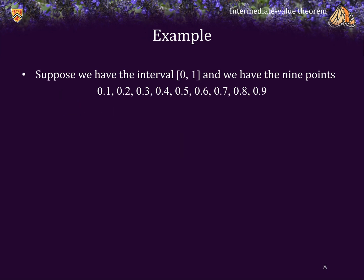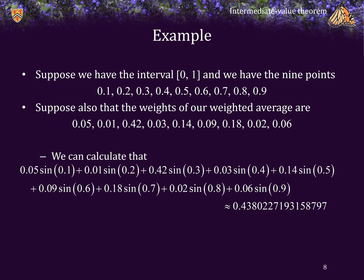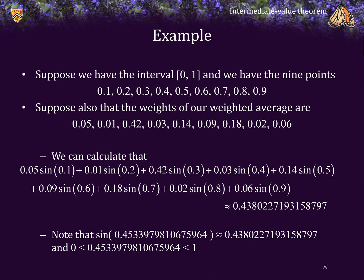As an example, suppose we have the interval [0, 1] and the 9 points 0.1 through 0.9. Suppose the weights of our weighted average are these 9 values, and they sum to 1. The sine function is continuous, so if we calculate sine at each x-value and take the corresponding weighted average, it works out to approximately 0.438. Note that sin(0.453397981...) is approximately equal to this value, and this x-value is indeed between 0 and 1.